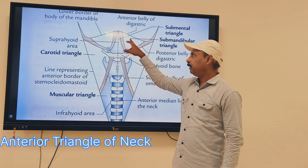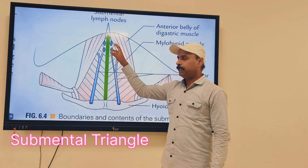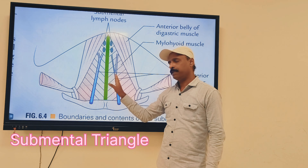On each side you are going to get the anterior belly of the digastric. The base is formed by the hyoid bone and the apex is at the chin. This is a median triangle — it lies in the midline, half on the right side and half on the left side. It is situated in the submental region. Deeper to this we have the mylohyoid muscle making the floor.